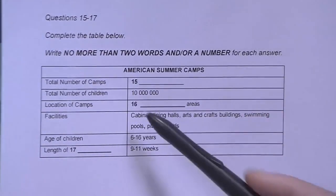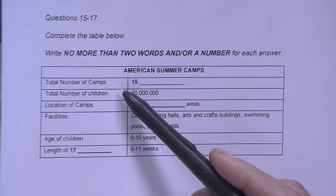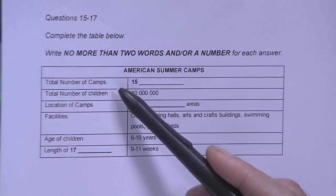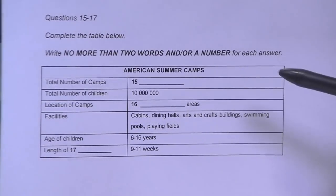So in question 15, for example, the answer you give must correctly describe this heading, the number of summer camps. And of course, this information must be what you hear in the listening text.